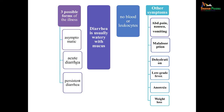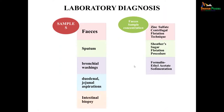Three possible forms of illness can occur: asymptomatic illness, acute diarrhea, or persistent diarrhea. Diarrhea is usually watery with mucus; there is no blood or leukocytes. Other accompanying symptoms include abdominal pain, nausea, vomiting, malabsorption, dehydration, low-grade fever, anorexia, and weight loss, as people generally avoid eating during this time.